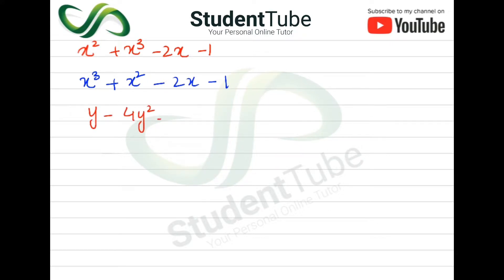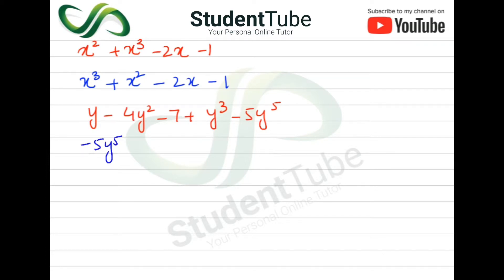Next question: y - 4y² - 7 + y³ - 5y⁵. There is only one variable y, so we'll use it. We look for the term with the largest exponent of y — that is -5y⁵, which comes first since its exponent is 5. After that comes +y³ (exponent 3), then -4y² (exponent 2), then -y (exponent 1), and finally -7 as it has no variable.